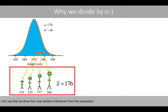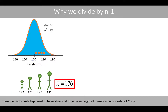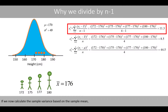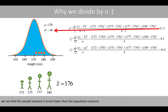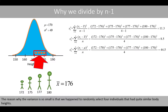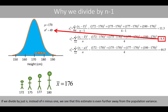Let's say that we draw four new random individuals from the population. These four individuals happen to be relatively tall. The mean height of these four individuals is 176 centimeters. If we now calculate the sample variance based on the sample mean, we see that the sample variance is much lower than the true population variance. The reason is that we happened to randomly select four individuals with quite similar body heights. If we divide by just n instead of n minus 1, this estimate is even further away from the true population variance.